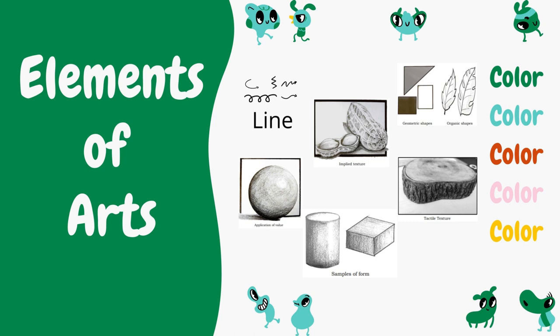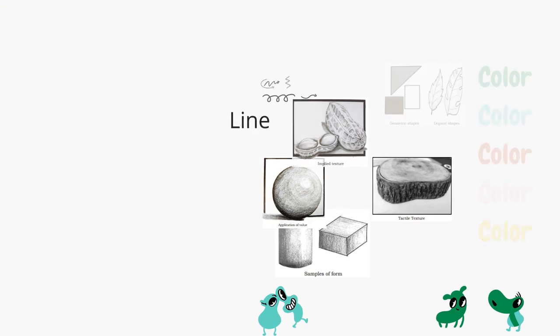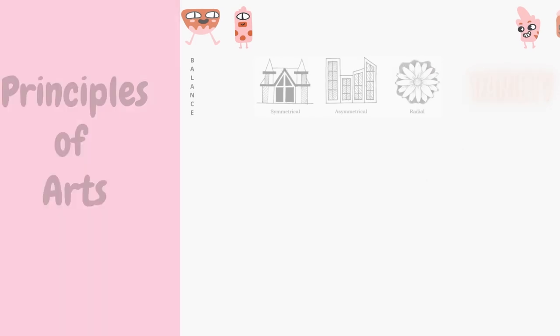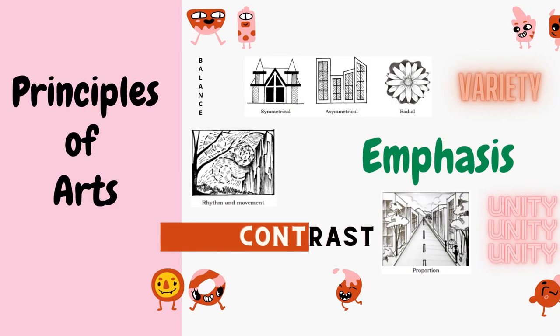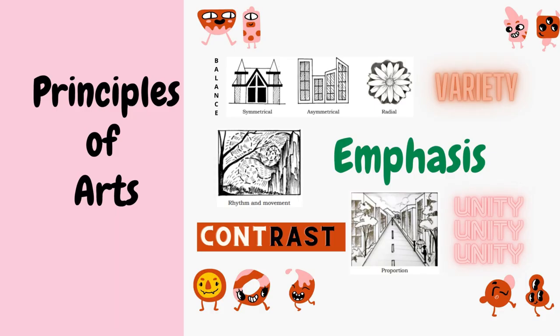The last element refers to the distance around, between, above, below, and within an object — it is called space. There are two types of space: positive and negative. Positive space is the space used, or the space where the object is placed. Negative space is the unused space. Principles of arts are tools to make the elements of art organized.